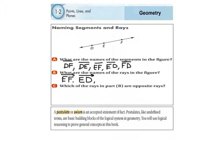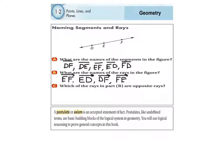Let's pick another starting point — let's start at D. D always goes first, and then I pick another letter, so let's pick F: ray DF. Then let's use F as a starting point. Starting at F, going to the left toward E — ray FE. Notice that the first letter on all of these rays is their starting point.